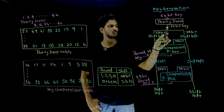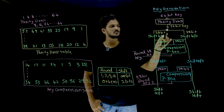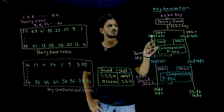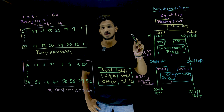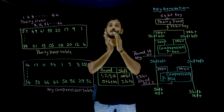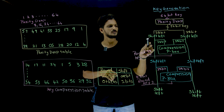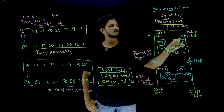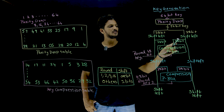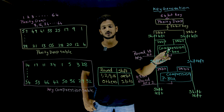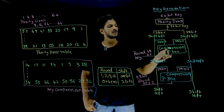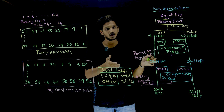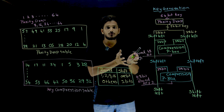Now this is our actual key — the 56-bit key. What happens inside: this 56-bit key is divided into two halves of 28 bits and 28 bits. These 28 bits undergo a circular left shift, and these other 28 bits also undergo a circular left shift. Then these two 28-bit halves come into the compression p-box. The compression p-box takes 28 plus 28, which is 56 bits, and compresses them to 48 bits.